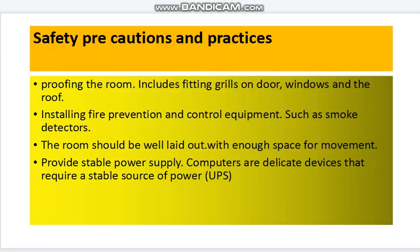Now let's talk about the safety precautions and practices, which are mainly for the laboratory. The first one is proofing the room. Since the computer laboratory contains a large number of electronic devices, the room should be proofed by fitting grilles on the doors, windows, and the roof to enable more safety for the electronic devices from any disruptions.